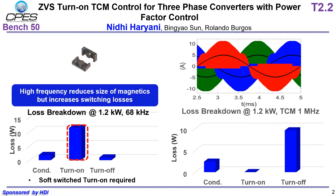When we look at the loss breakdown at 68 kHz for the GaN converter, we can see that it has very small turn-off losses, but the turn-on losses are pretty high even at such a low switching frequency. This is the benefit of having wide bandgap devices — the turn-off losses are low, but the turn-on losses are still high. Hence, we need ZVS turn-on.